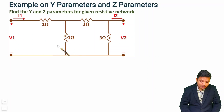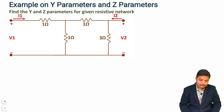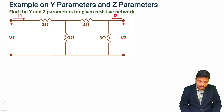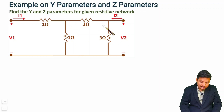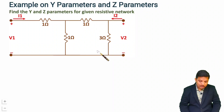That approach involved a lot of calculation. Now I want to show how we can simplify things using network theorems. If we can convert this network into a simple T or Pi network, we can calculate Y and Z parameters more easily by solving just two equations.